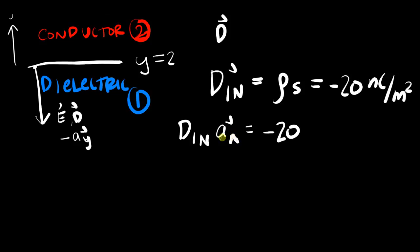But the normal vector to this surface that must be the one being applied is in the negative aᵧ direction, because none of this stuff can go inside the conductor. So let's plug that in: D₁ₙ times negative aᵧ equals negative 20.